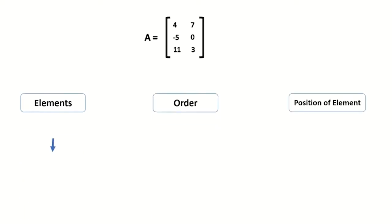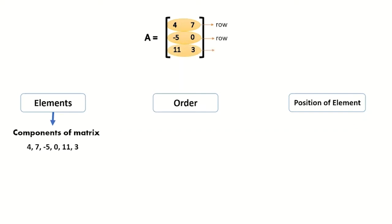Second is order. Matrix A has 3 rows — the ones that are horizontal — and 2 columns — the ones that are vertical. The order of this matrix is called 3 by 2.